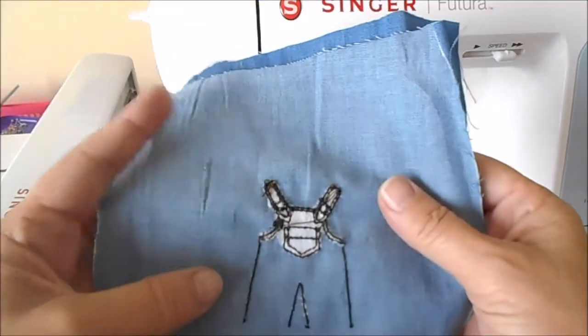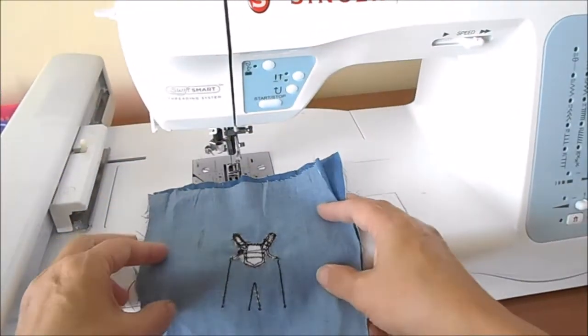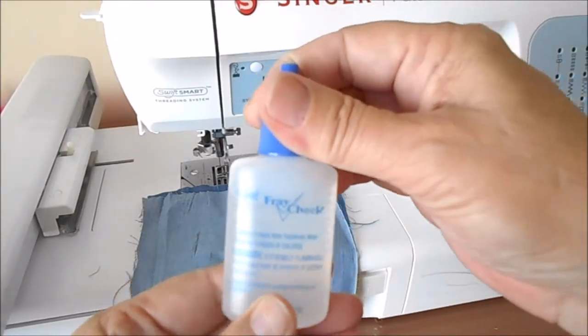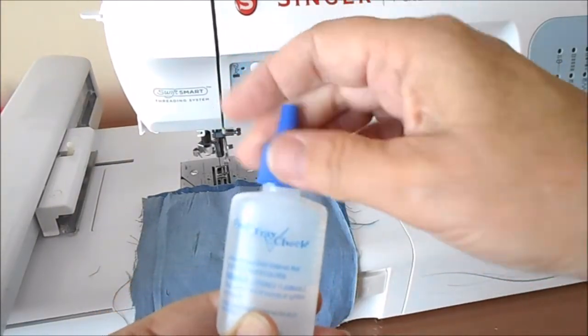I'm finished sewing the design. Now, before I cut out the design, I've torn away the stabilizer and I'm going to put some fray check along the edges where I'm going to be cutting.